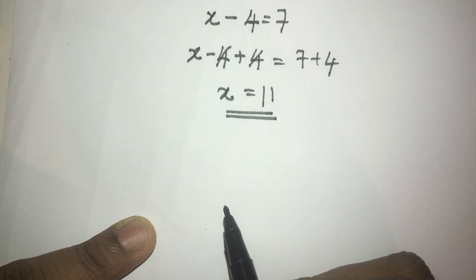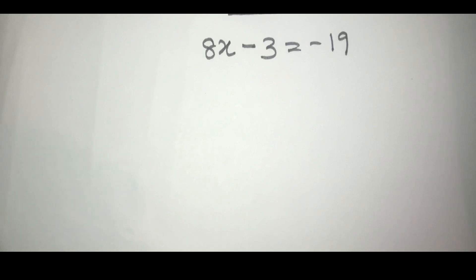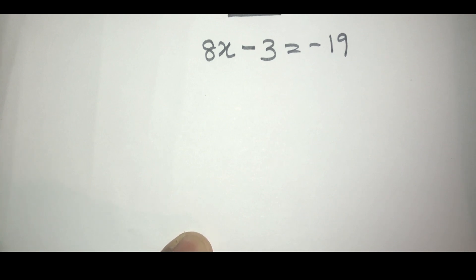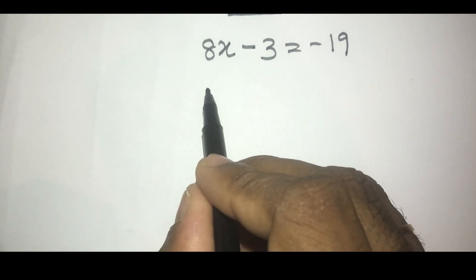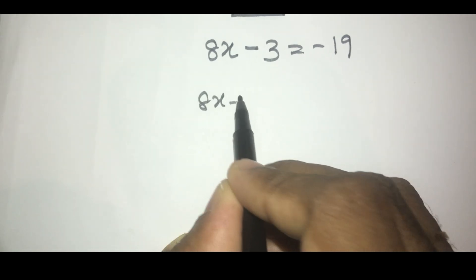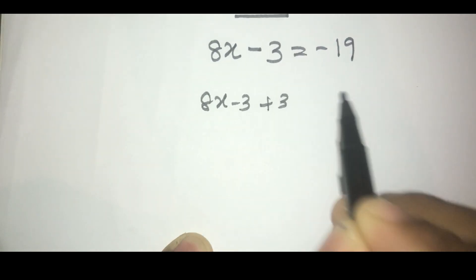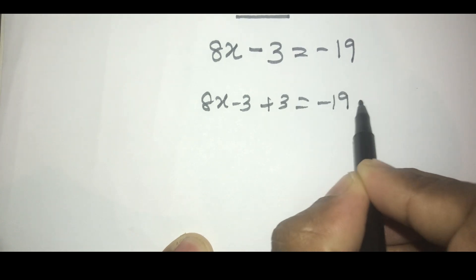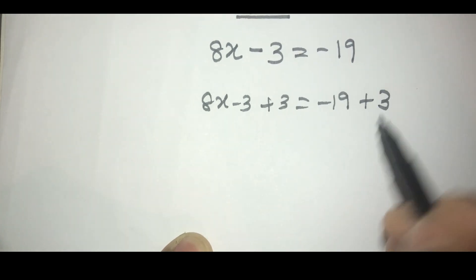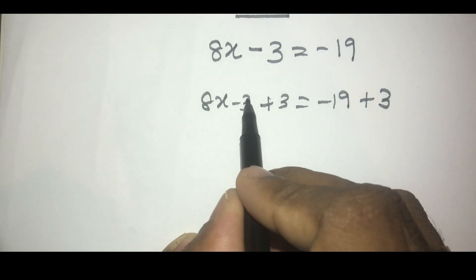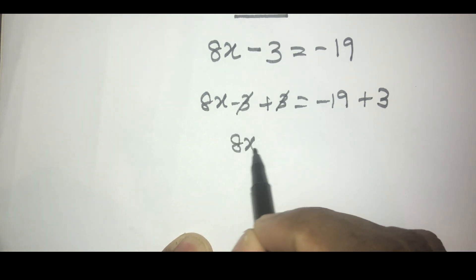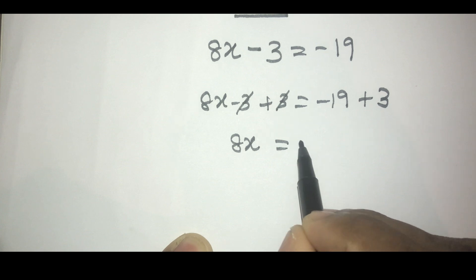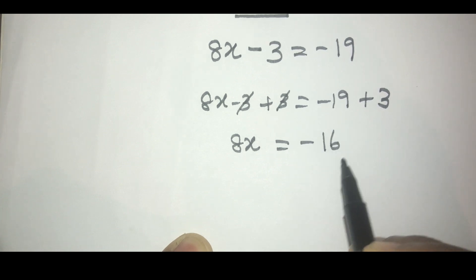In order to solve this equation, we need to add three to both sides. So here, minus 19 plus 3 — this will be cancelled, so 8x equals minus 16.